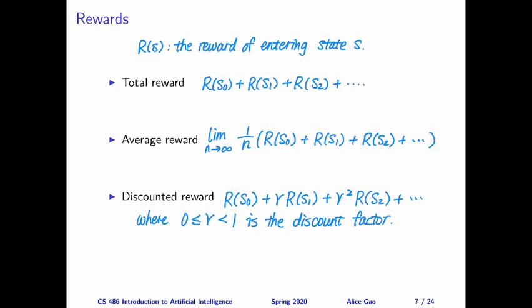When we're calculating total reward, we are simply taking the reward we get at each time step and adding them together. So the sum is the total reward.